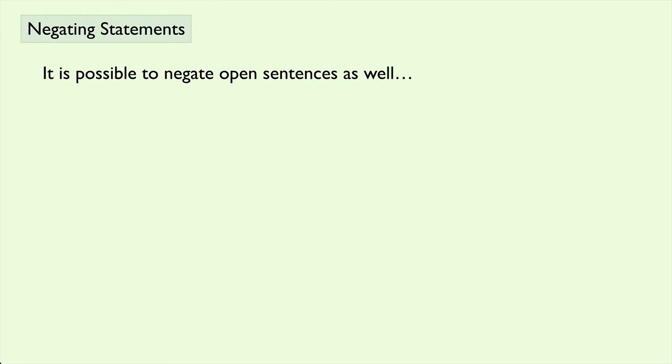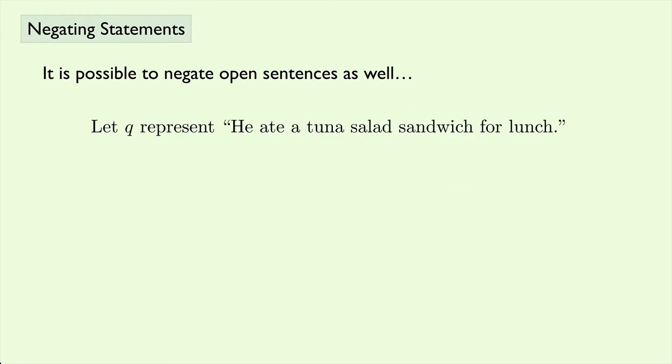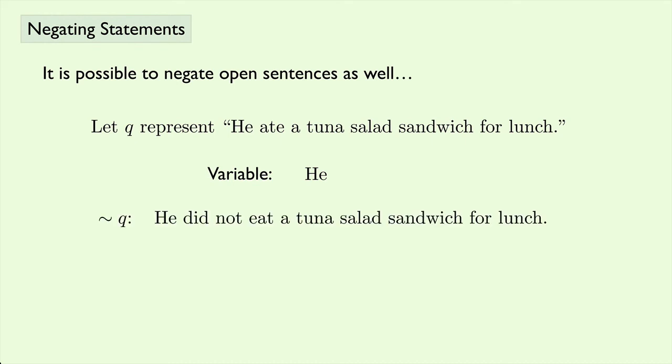You can also negate open sentences. Let Q represent: he ate a tuna salad sandwich for lunch. In this case, the variable in this open sentence would be he, and the truth value depends on who he is. But it doesn't matter — we can still negate it. The negation of Q would be: he did not eat a tuna salad sandwich for lunch. To summarize, when you negate either a statement or an open sentence, it changes the truth value.